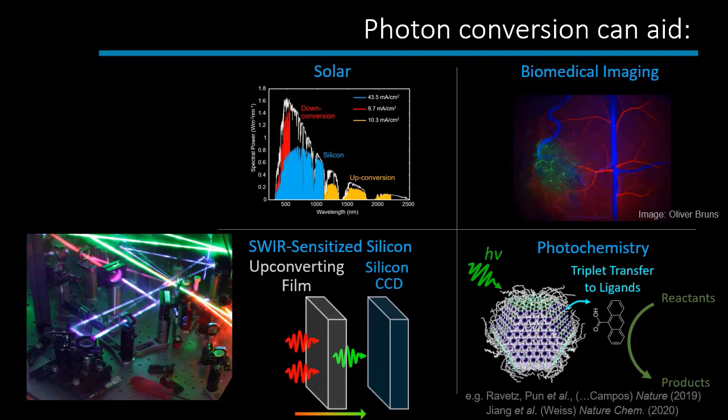The applications we can talk about are really rather varied and generally start with the grand challenge of the field, which is the idea of reshaping the input solar spectrum to better harness the energy of light. This is the idea of surpassing the Shockley-Queisser limit using a non-tandem cell type geometry. This long-range dream requires our materials to be cheap, to last for 50 years, and to have essentially perfect efficiency — so I see it as a long-range challenge. In the short term, I'm really interested in exploring more niche and nuanced ways that we can exploit photon conversion to do interesting things.